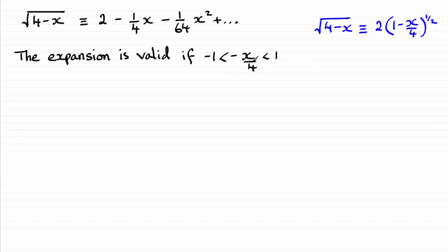So in order to find out what x would have to be in a case like this, I'll take you slowly through this bit. I'd multiply each of these three values by 4 first of all, and I would therefore have negative 4 is less than minus x is less than 4.